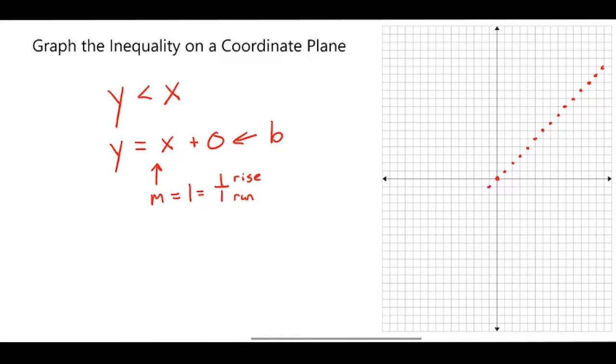Also continue that down the other direction. And so I made this a dotted line because you'll notice right here that y is less than x and there is not an underline underneath the less than symbol. If there was an underline, it would be a solid line. But since it is just less than I make it a dotted line.